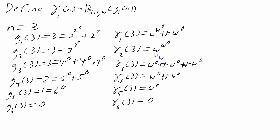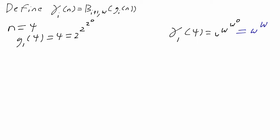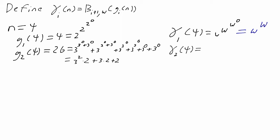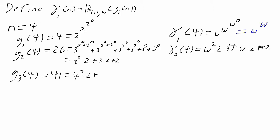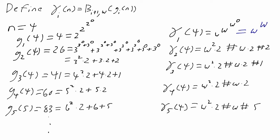To take just the beginning of a longer example, we start with n = 4. So g_1(4) is 4; in hereditary base 2 that's 2^2, so gamma_1(4) is omega^omega. Then g_2(4) is 3^3 - 1, which is 26, so gamma_2(4) is the equivalent with omegas. We can write out the next few steps of both sequences. The Goodstein sequence might keep increasing, but notice that the ordinals — the gamma sequence — is decreasing at every single step.